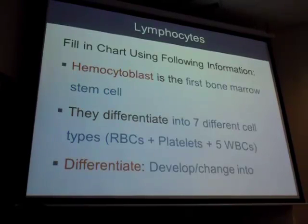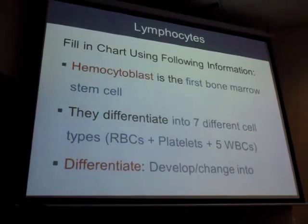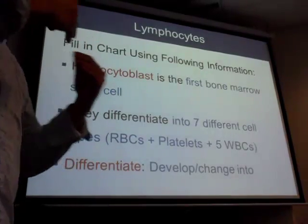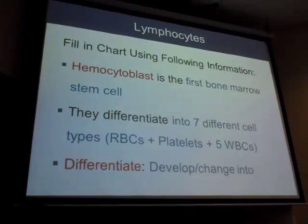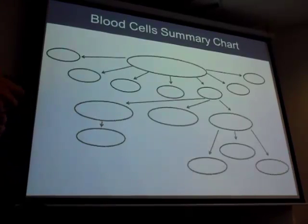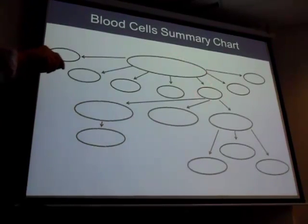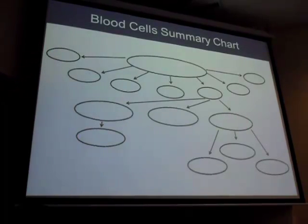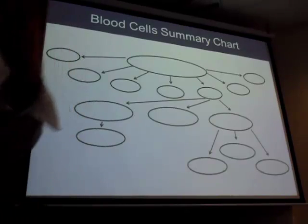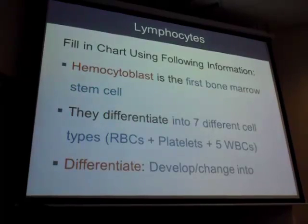The hemocytoblast is the first bone marrow stem cell. The word 'differentiate' means a cell becomes more specialized — it changes into something specific. For example, a hemocytoblast differentiates into a lymphocyte, a lymphocyte differentiates into a T cell, and a T cell can differentiate into T helper 1 or T helper 2. Things become more specialized as they differentiate.